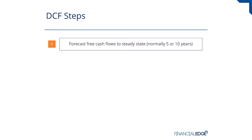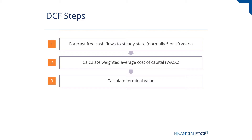You might then ask: the company I'm trying to value is not going to exist just for ten years — what about the cash flows it's going to generate from years eleven onwards? If I jump to step three quickly, that's represented by the terminal value. We need to calculate this terminal value, and it will represent all of those cash flows from years eleven onwards.